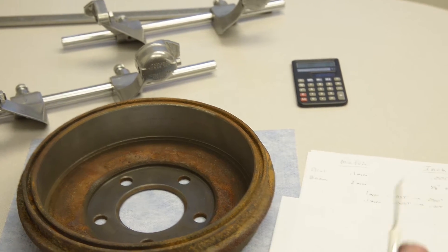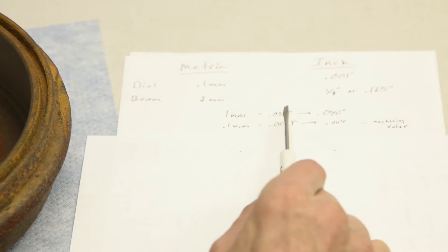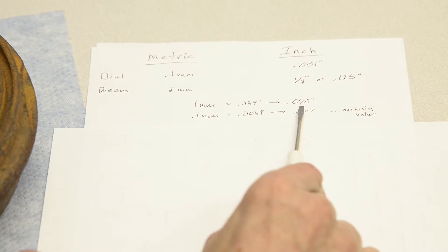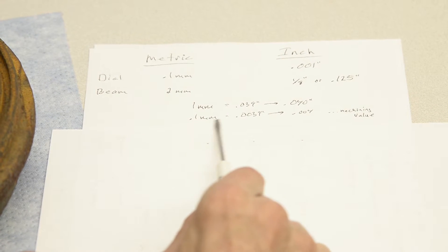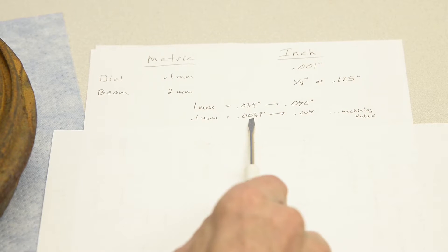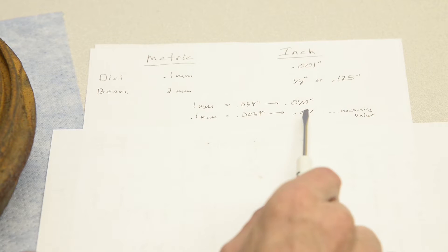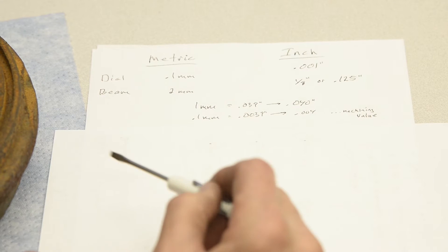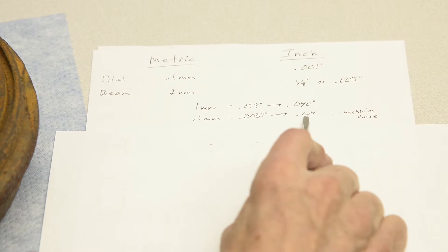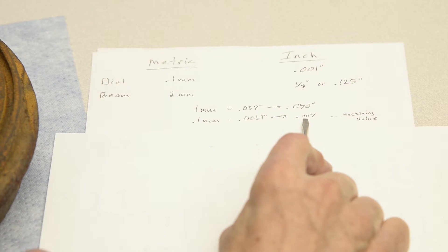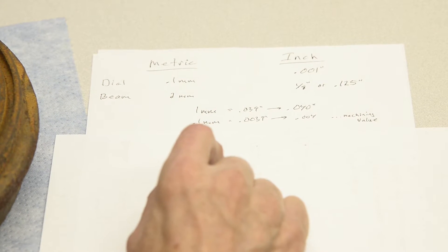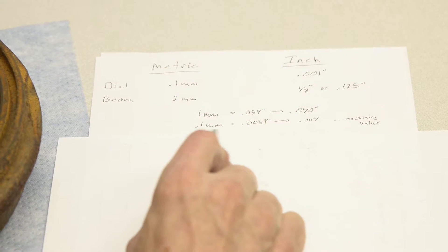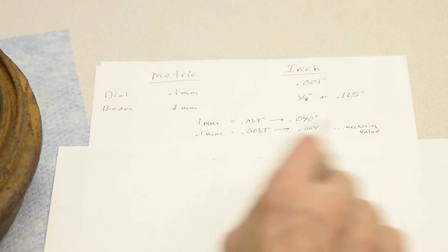So just for reference, and this helps me, one millimeter equals about 39 thousandths, I'll just round it off to 40 thousandths, whereas 0.1 millimeter is about 4 thousandths. This is helpful when we're machining a drum or rotor to have these values or comparisons in mind, because quite often we'll say take off 4 or 5 thousandths, take off 8 thousandths, 10 thousandths of an inch. So in the metric world we'll probably say let's take off 0.1 or 0.2 or 0.3 millimeters. That's a reference point, at least for me.